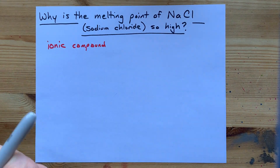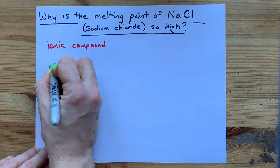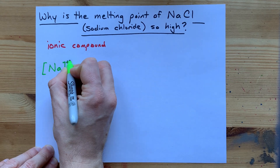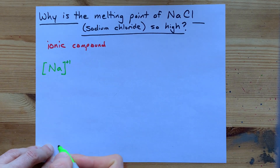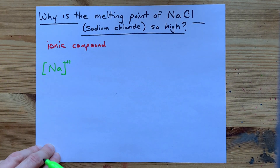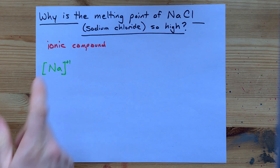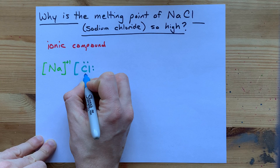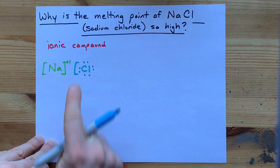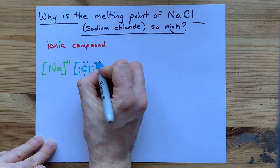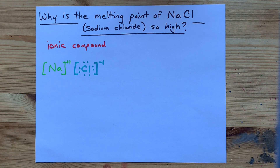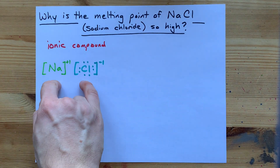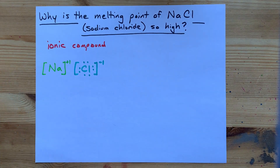Ionic compounds are made when metals and non-metals bond together. The Lewis structure for NaCl has Na without its extra valence electron, and therefore a plus-one charge, and Cl, along with the seven valence electrons it brings and the extra one from sodium, giving it a minus-one charge. But this is just one unit of a larger crystal.